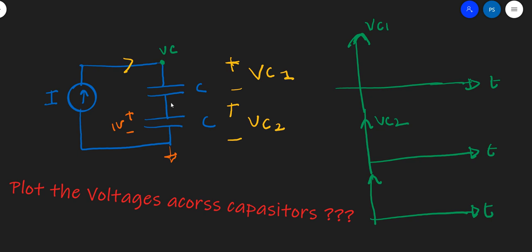This problem becomes much more simpler because if you look at this, the same current—the current entering this capacitor is I and the current entering the other capacitor is also I—so I can solve this separately. We know that if there is a current into the capacitor, the capacitor actually integrates the current.